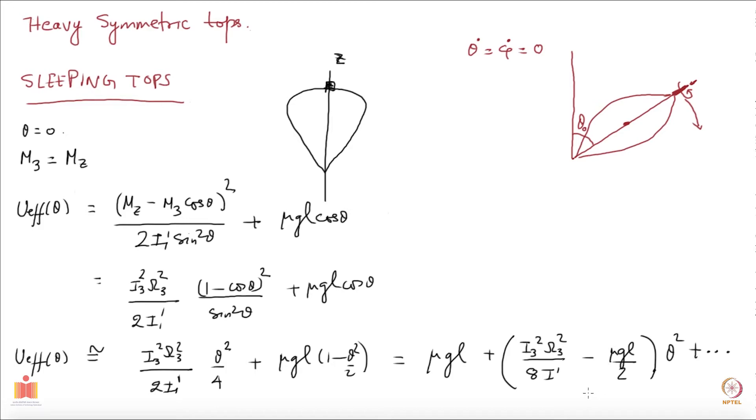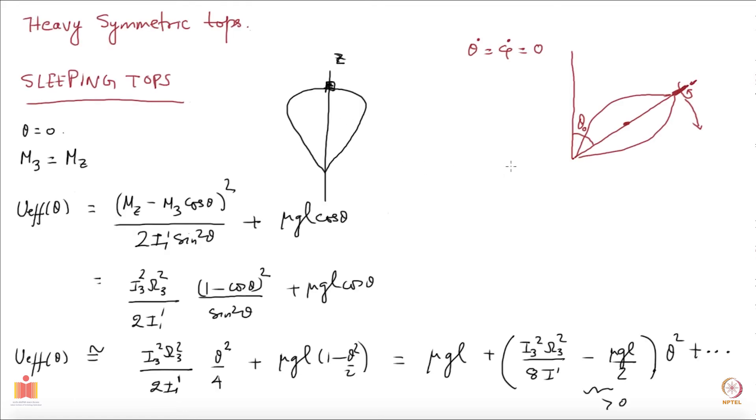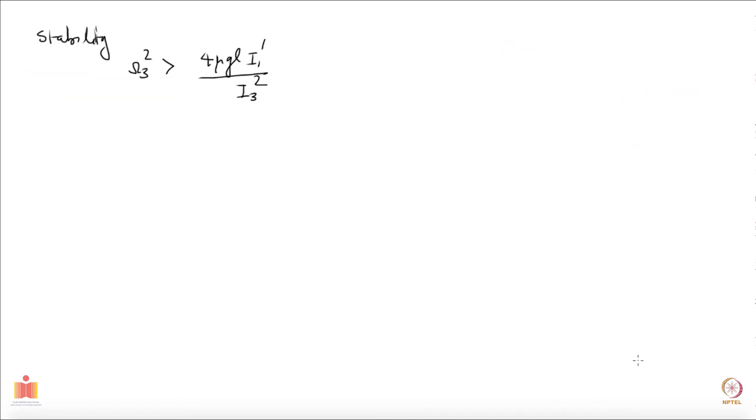We have to ensure that this is greater than 0 which means the condition for stability is omega 3 square greater than 4 mu gl i1 prime over i3 square. This is omega 3 square and this entire thing should be greater than 0. I bring it to the other side and this is what I get.